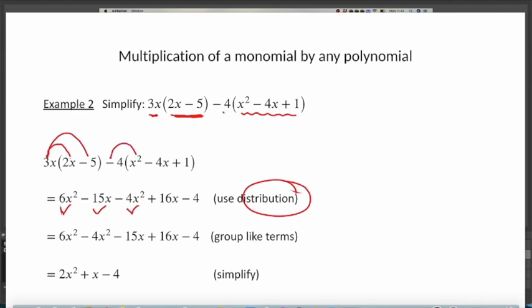Then distribute the -4: (-4) × x² = -4x², and (-4) × (-4x) = +16x, and (-4) × (-1) = -4. In this example we have like terms. Comparing 6x² and -4x², you notice the exponents are the same — both use variable x with exponent 2 — so these are like terms and can be simplified.